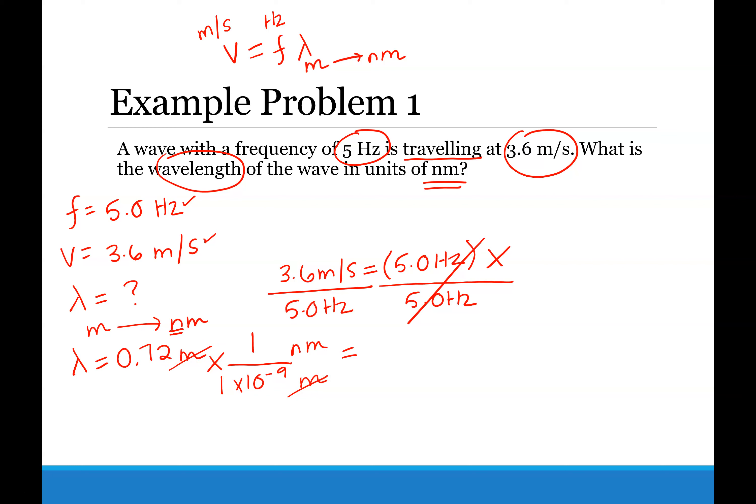So in your calculator, 0.72 divided by 1 times 10 to the minus 9. And that gives you a wavelength of 7.2 times 10 to the eighth nanometers.